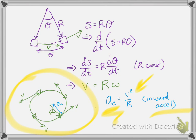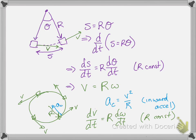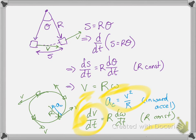We had done this so far for just uniform circular motion. But what if v changes? Then we're going to have an additional acceleration. The inward acceleration is due to just the fact that we're changing angle. But if speed changes as well, we get another acceleration. I can take the time derivative again of both sides and get dv/dt equals r dω/dt. The question is: what is this dv/dt? It's not the centripetal acceleration — that is v squared over r. So it's a different acceleration.